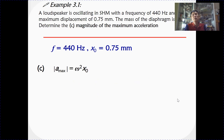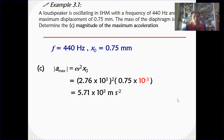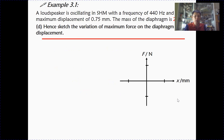We also learned from section 2 that the maximum value for acceleration is ω² × x₀. Doing the relevant substitution, we get 5.71 × 10³ metres per second squared. For the next part we need to sketch the force.